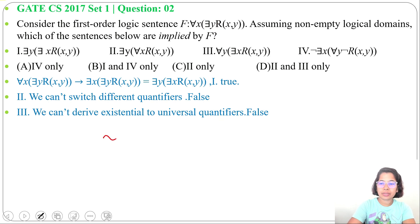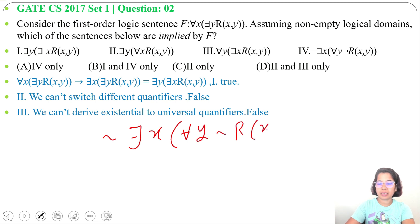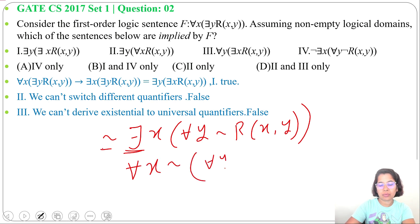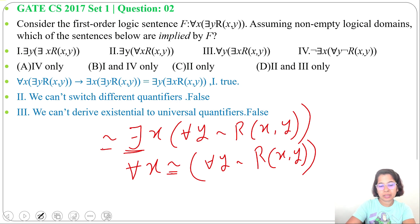Next, statement 4: negation of there exist X, for all Y, negation of R of X, Y. We take the negation inside — the existential quantifier changes to a universal quantifier, giving: for all X, negation of for all Y, negation of R of X, Y. We then take this negation inside again, giving: for all X...